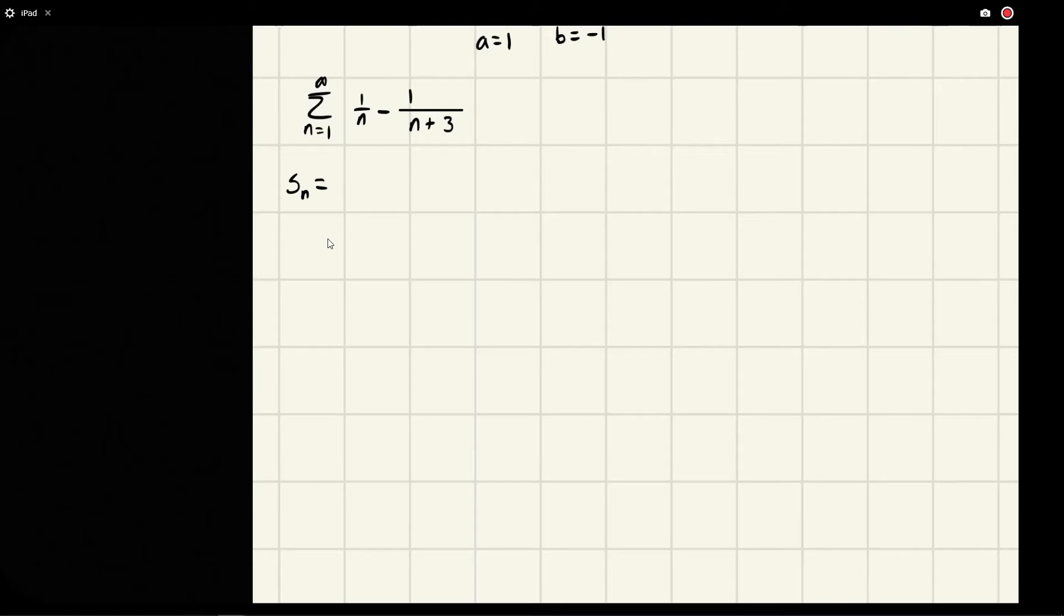So we're going to get the sum, the partial sums, is going to be equal to 1 over 1, right, the first term, minus 1 over 4. And then we're going to add to it, and then when n is 2, we're going to get 1 over 2 minus 1 over 5.